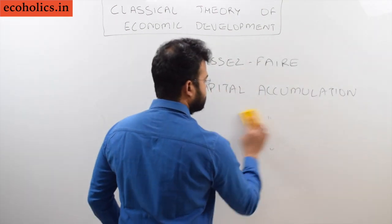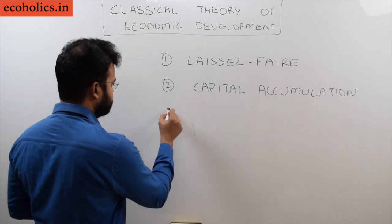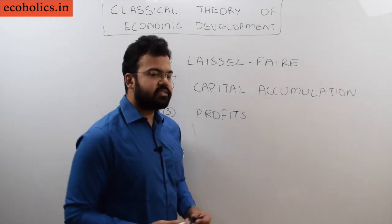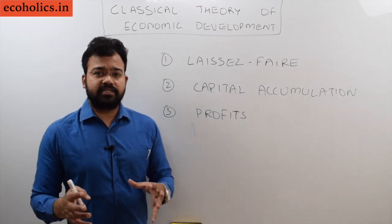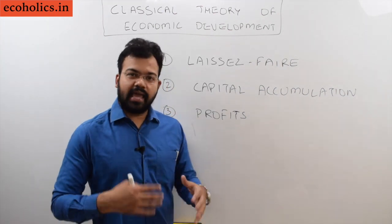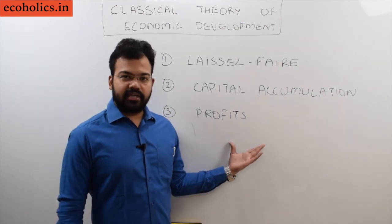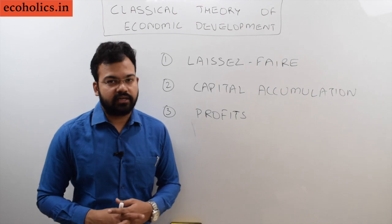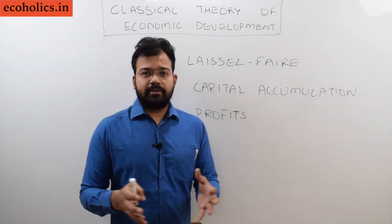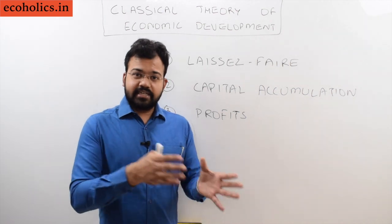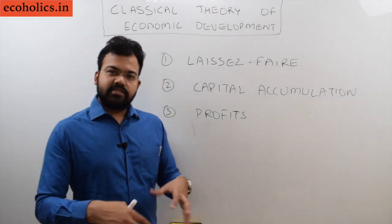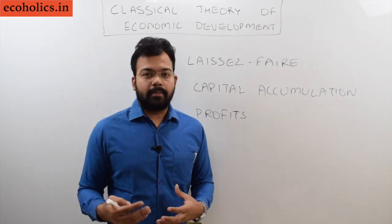The third important thing classical economists identified was profits. Profits are important because whenever an entrepreneur or investor sees a scope of profit, they will invest a huge amount of capital. Profits work as an incentive for investors and are vital in directing investment toward a particular sector. For example, in the current Indian economy, policymakers are liberalizing FDI policy — opening the market — which is an incentive for foreign investors to 'Make in India.' Whenever an investor sees profit, they invest large amounts of capital in that sector.